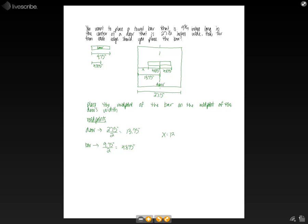That distance x will be equal to 13.75 inches minus the portion of the bar on this half of the door, which is 4.875 inches. So x equals 8.875 inches from the edge.